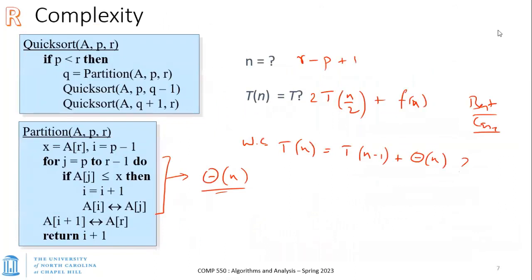We looked at the loop invariant, and in the last lecture we asked: what's the complexity analysis? We said you could take T(n), and in the best case divide it into two parts if the pivot is right in the middle, giving two equal-size sub-problems. You have some function depending on how much time partitioning takes, and since you're comparing the pivot to all other numbers, the complexity of that is Θ(n).